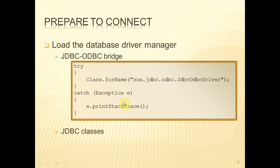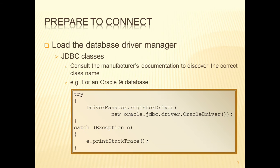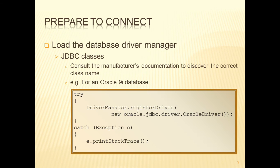Loading the driver manager requires two options depending on your connectivity type. If it's the JDBC-ODBC bridge, in a try-catch block you use Class.forName with the string 'sun.jdbc.odbc.JdbcOdbcDriver' — that string is always the same no matter what database you're using. If you're using JDBC classes provided by the database manufacturer, you'll need to consult the documentation to find the correct class name, and use DriverManager.registerDriver, creating a new instance of that class. For Oracle, it would be oracle.jdbc.driver.OracleDriver, which will be in the JDBC classes downloaded from the manufacturer's website.